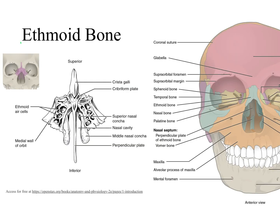When we look at the ethmoid bone from an anterior view, the only part we can see is inside the bony orbit, which means the ethmoid bone also makes up the bony orbit. The great majority of the ethmoid bone is hidden behind the frontal bone, the maxilla bone, and some other bones — that's why in this view the ethmoid bone appears faded.